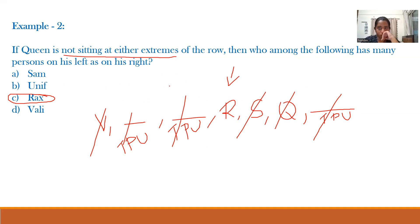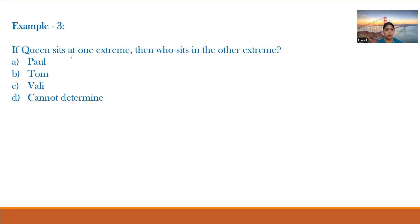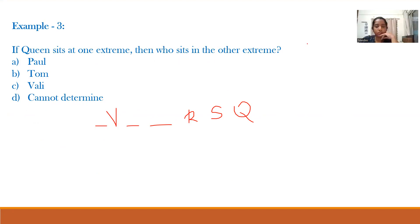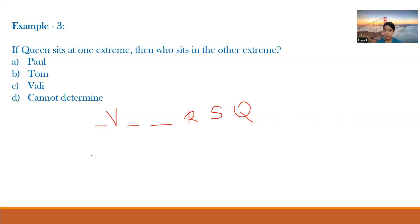Sub-question 3: Who sits at the other extreme? We have Wali, two blank spaces, Rax, Sam, Queen — and since Queen is at one extreme, three spaces remain on the other side. We still don't know who occupies that extreme. The answer is option D: cannot be determined.